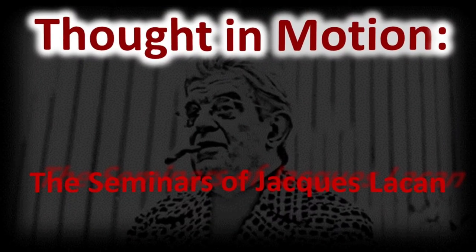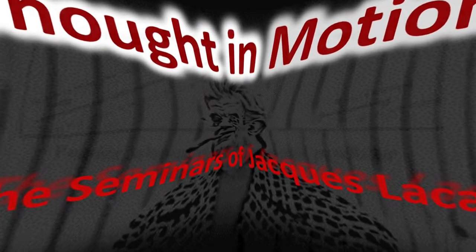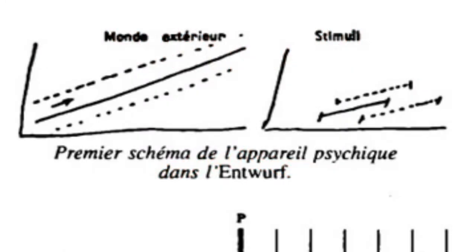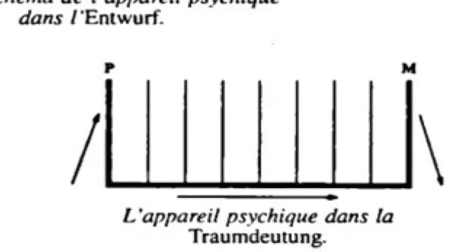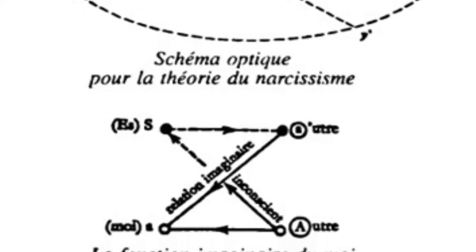This is Thought in Motion, a series dedicated to the seminars of psychoanalyst Jacques Lacan. Today's video covers lecture 11 in seminar 2. Previously we discussed Freud's earliest model of the mind, which he based upon his understanding of thermodynamics and the neurology of his day. This is only the first of four different models presented over the course of Freud's work. According to Lacan, we are provided a second model in The Interpretation of Dreams, a third based on his later theory of the libido, and a fourth model in Beyond the Pleasure Principle. Lecture 11 leads us into the second model developed in chapter 7 of The Interpretation of Dreams, which this lecture and the next are based on.